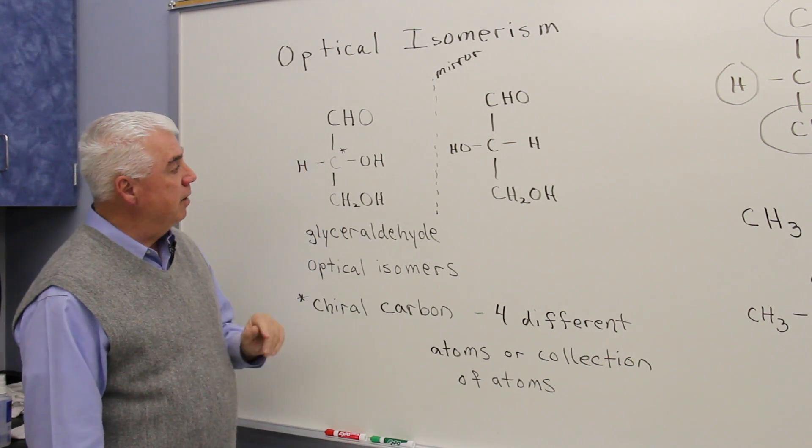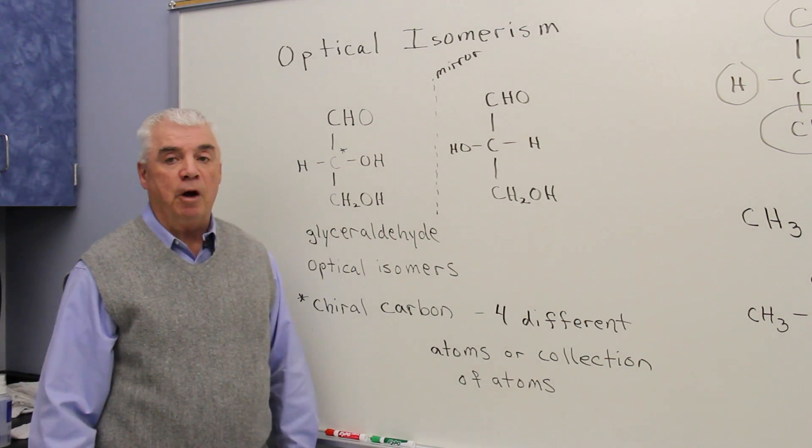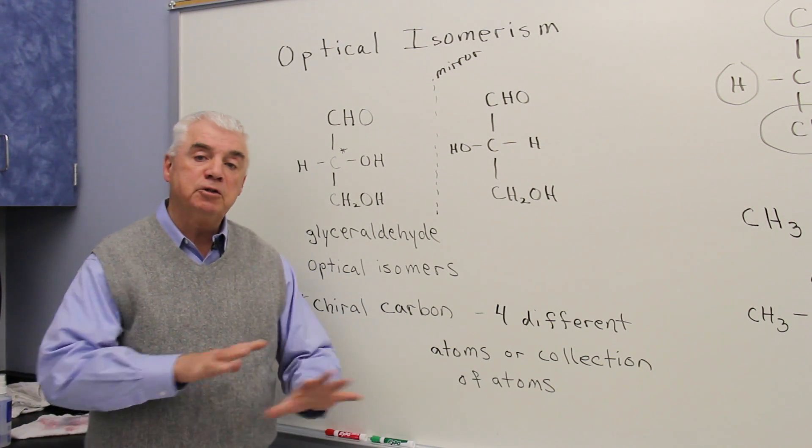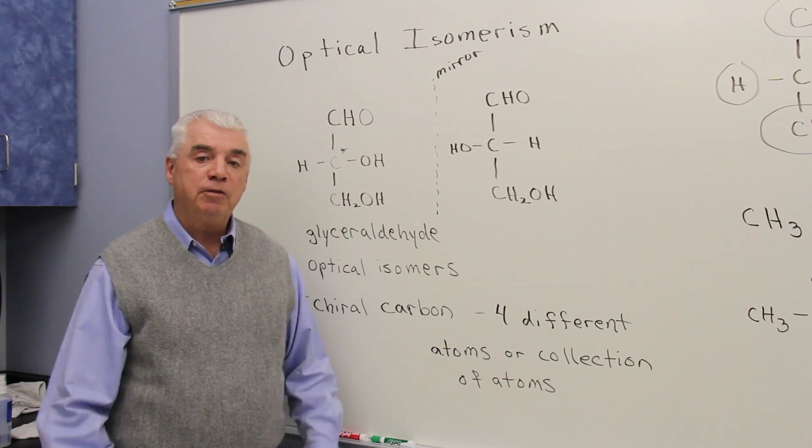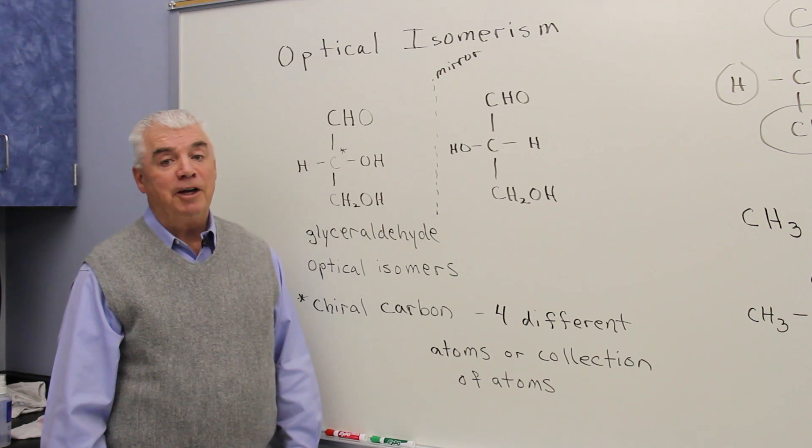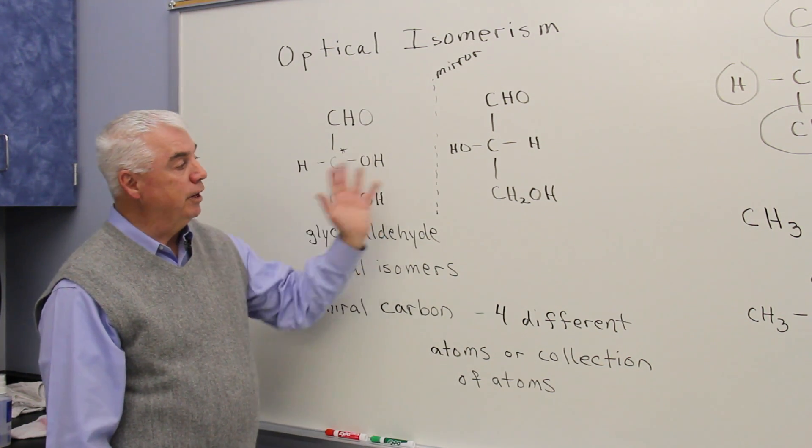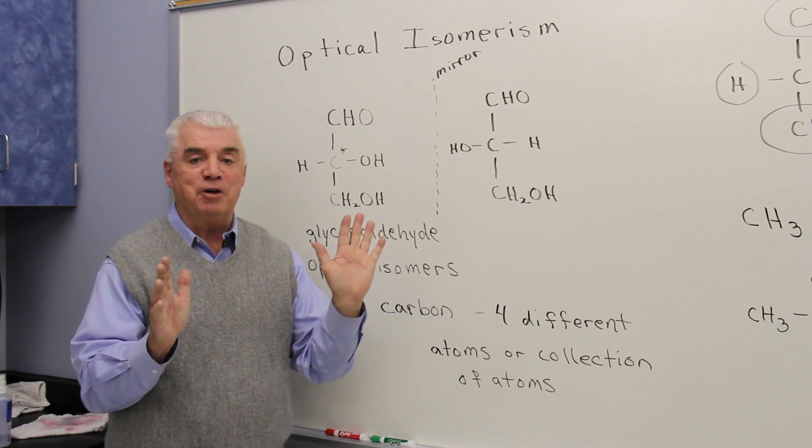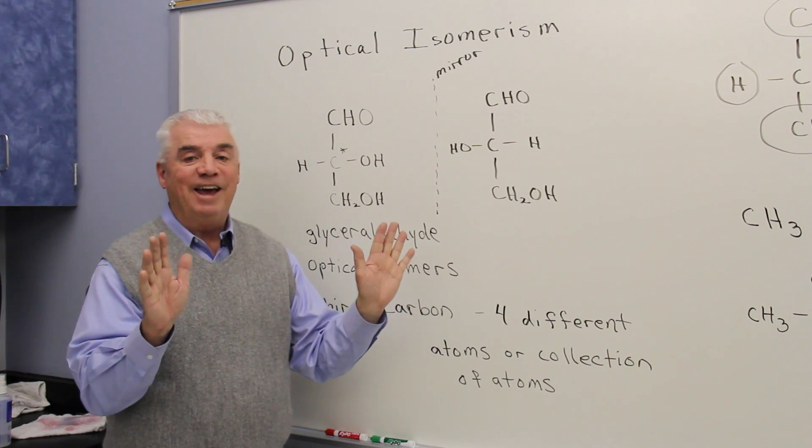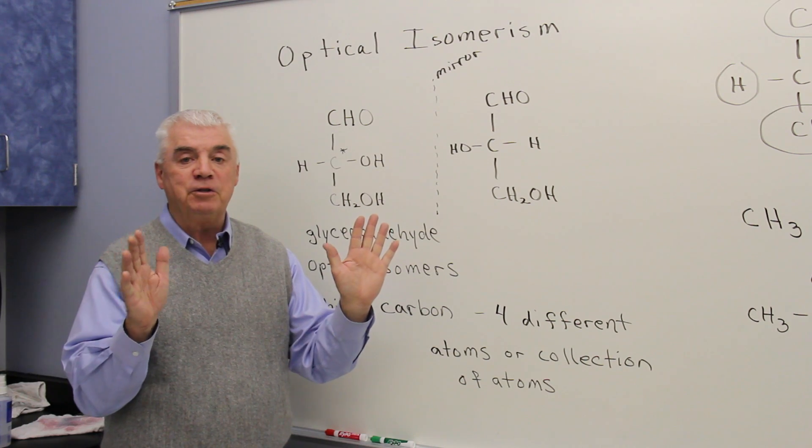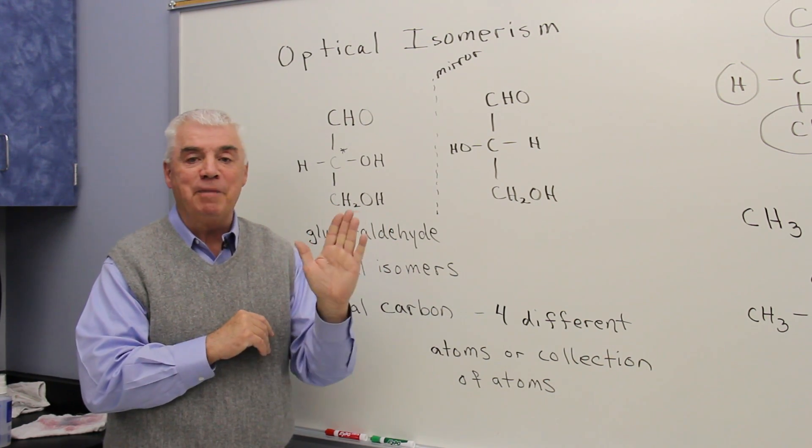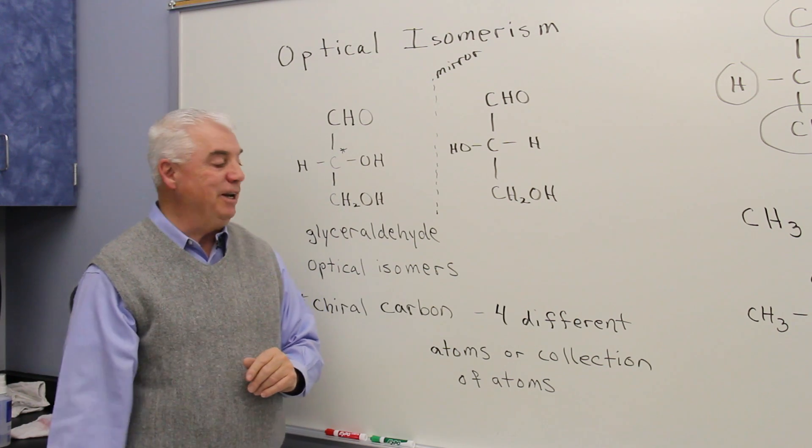And if we were to take these two structures and build models of them, we'd find that we couldn't superimpose them, that they're unique structures, that they're not exactly the same. So in other words, they indeed are isomers, much like our two hands. Our left hand and our right hand have the same structural features, and yet we can't superimpose them. There's no way I can make a left hand into a right hand.